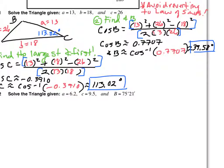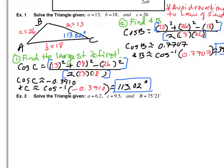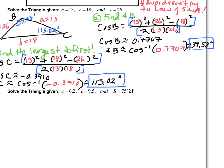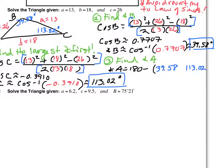This is part three: we update our picture with 39.58 degrees. All that's left is the easy one — find angle A. Angle A equals 180 degrees minus the sum of the two angles we found: 39.58 degrees and 113.02 degrees. Angle A is approximately 27.40 degrees. That's part three — update your picture with 27.40 degrees.